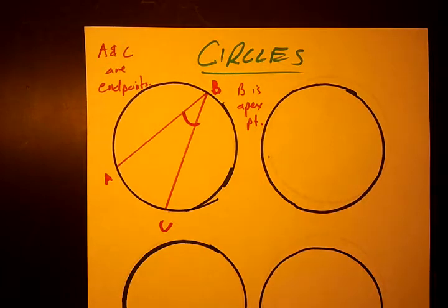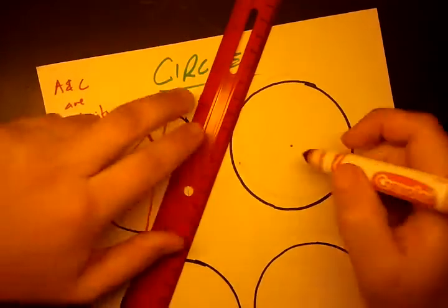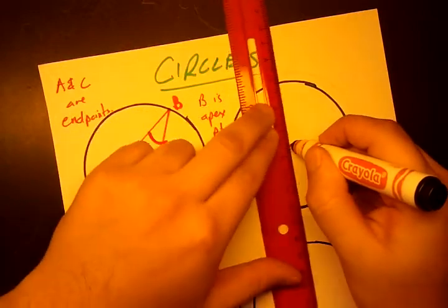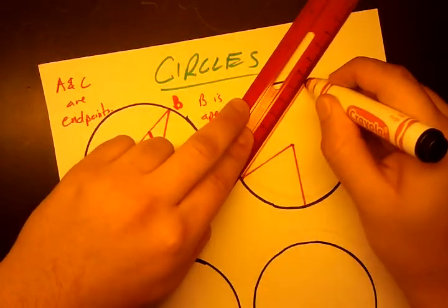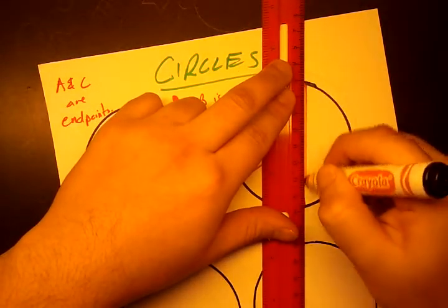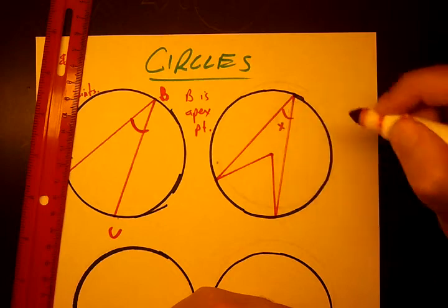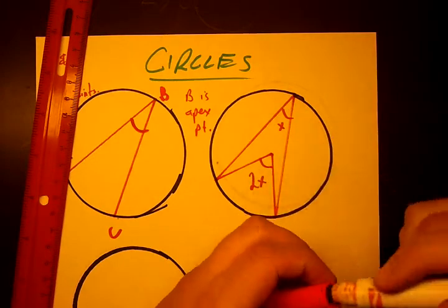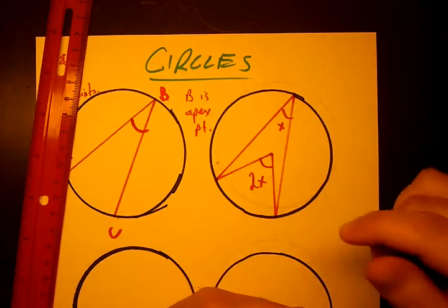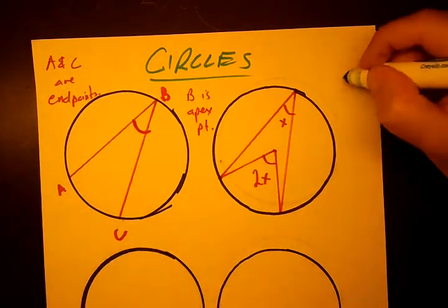Moving on from there, we're going to label this diagram. We're going to call this the center of the circle. This is called a central angle because it stems from the radius. Using these same endpoints, we're going to draw an inscribed angle. This theorem states that if the inscribed angle is equal to x, then the central angle is equal to 2x. So the inscribed angle is always half of the central angle that leads to the same endpoints. That's theorem number 1.